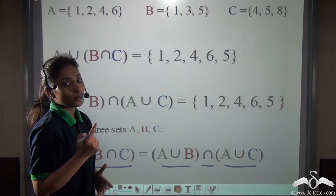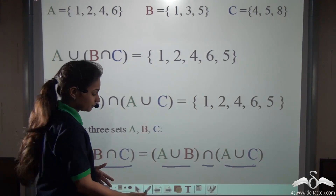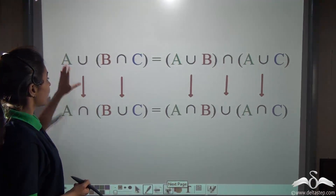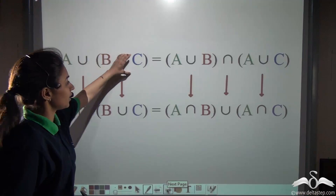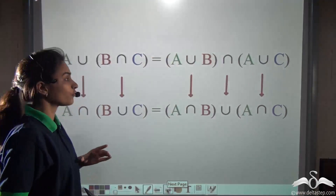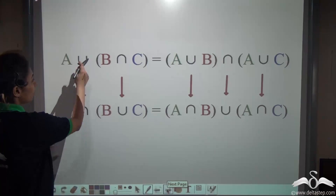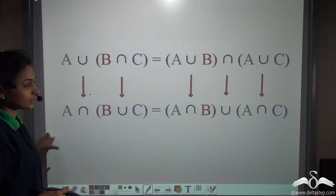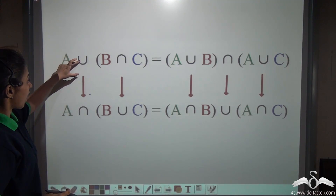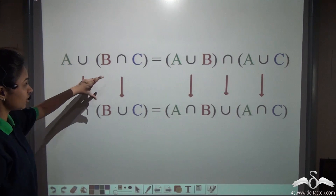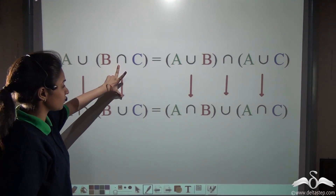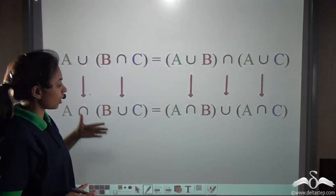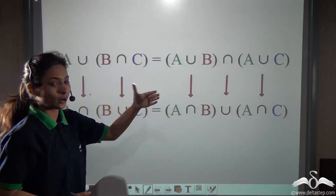Now I will tell you a very interesting fact. Look at this relationship which we have just proved. What if I reverse the signs? I have reversed union with intersection and intersection with union in all the places, along the whole equation.